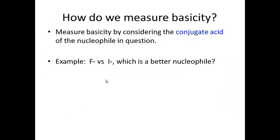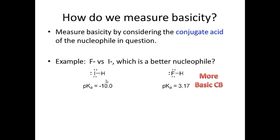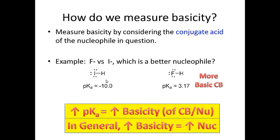A quick way to think about this is to consider how we measure basicity — we look at the pKa of the conjugate acid of the nucleophile. If we compare fluorine and iodine: the pKa for hydroiodic acid is -10, while the pKa for hydrofluoric acid is 3.17, making hydroiodic acid about 10 to the 13 times more acidic. Because the pKa of hydrofluoric acid is higher, the conjugate base — the fluorine nucleophile — is more basic. The higher the pKa of the conjugate acid, the higher the basicity of the conjugate base, and in general, the higher the basicity, the more nucleophilic the nucleophile will be.